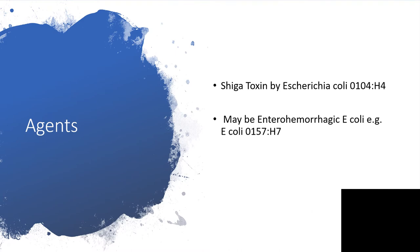The causative agents include Shiga toxin. In the case of enterohemorrhagic E. coli — and it may sometimes be caused by enterohemorrhagic E. coli, for example E. coli O157:H7. In the case of enterohemorrhagic E. coli, the stools will also be stained with blood — bloody — because they can attach firmly to the gut of the affected individual.